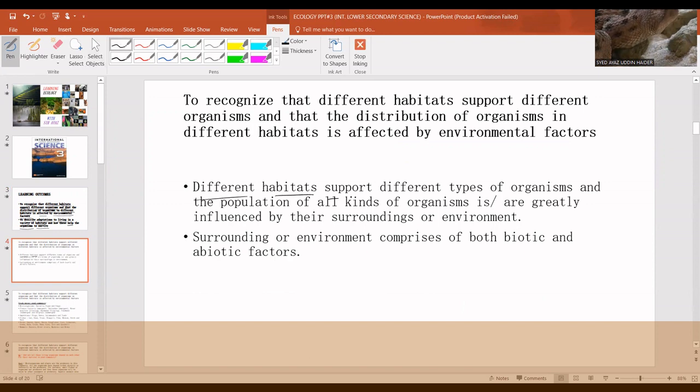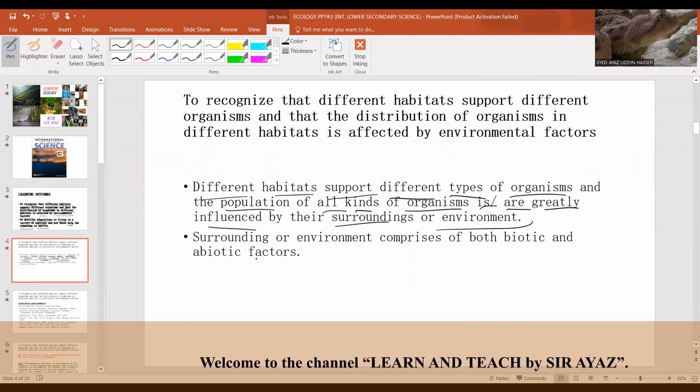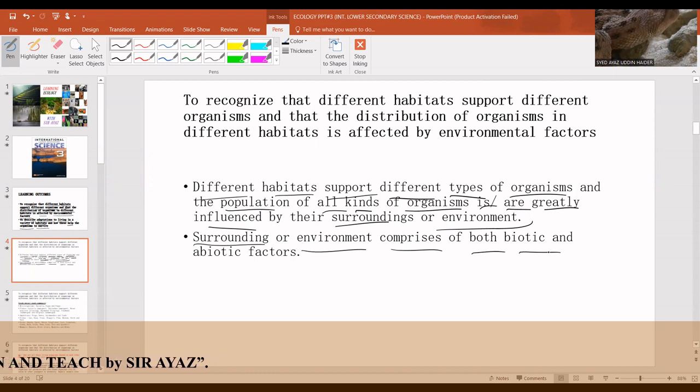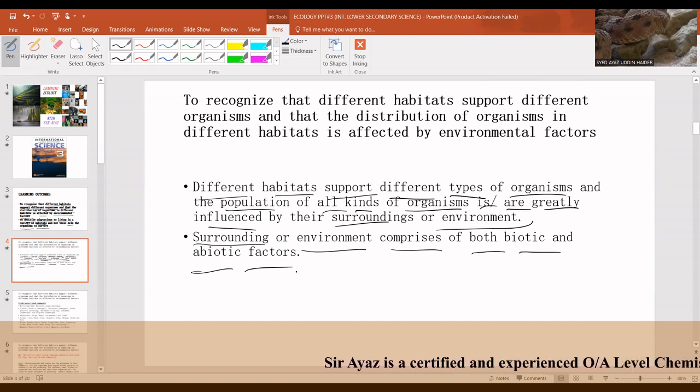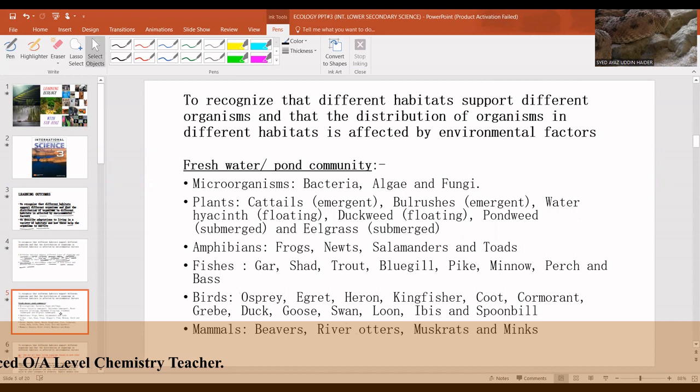Different habitats support different types of organisms and the population of all kinds of organisms is greatly influenced by the surroundings or environment. The surrounding environment comprises of both biotic and abiotic factors. I've already talked about biotic and abiotic factors in my last video. Biotic factors include all the living organisms. For instance,